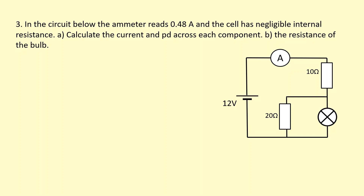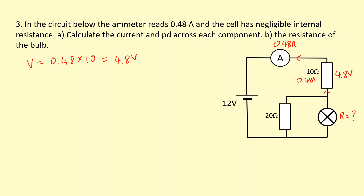In the circuit below, the ammeter reads 0.48 amps through this ammeter, with negligible internal resistance. Calculate the current and PD across each component and the resistance of the bulb. If I've got 0.48 amps of current flowing through that, that must mean the current through the 10 ohm resistor is also 0.48 amps. So the voltage across that is 0.48 times 10 ohms, giving 4.8 volts. That means the rest of the voltage is used across the parallel combination of the bulb and 20 ohm resistor. So doing 12 volts minus 4.8 gives 7.2 volts across each one.